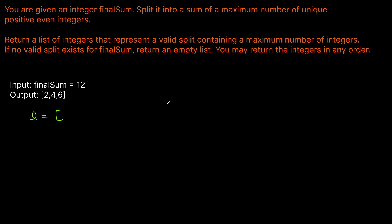We have to use even numbers, and the smallest even number available is 2. We'll keep track of our sum — current number starts at 2 and our running sum starts at 0. We add 2 to our list and update our sum. While our sum is less than 12, we continue — because we can't use negative numbers to bring us back down, we have to make sure we don't go over our target value.